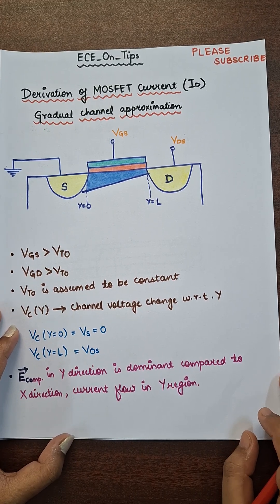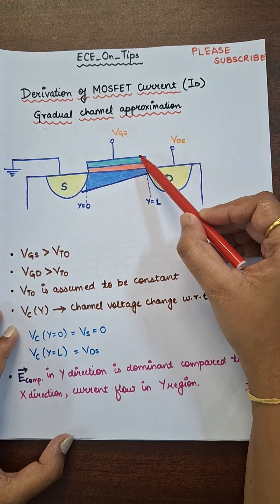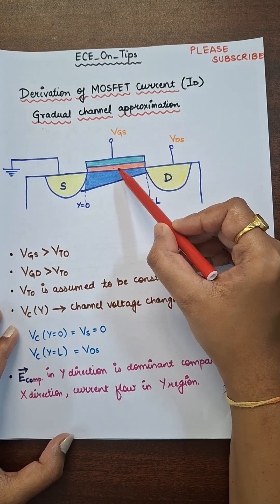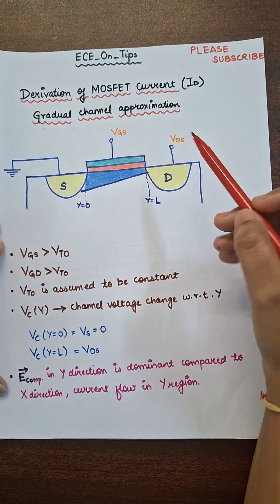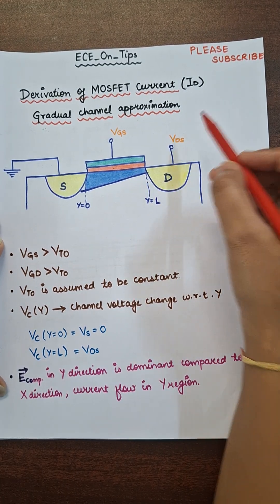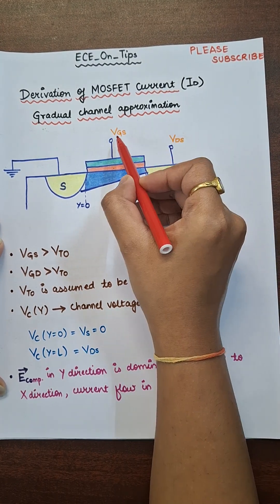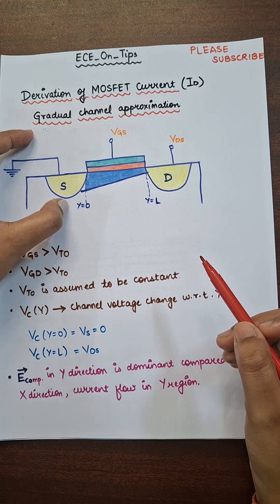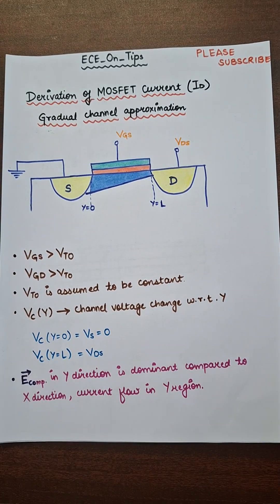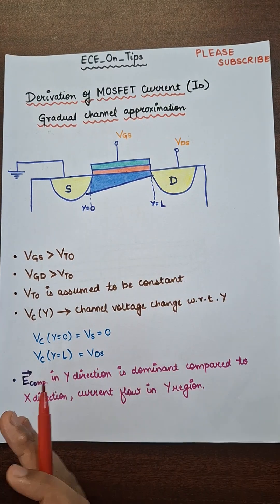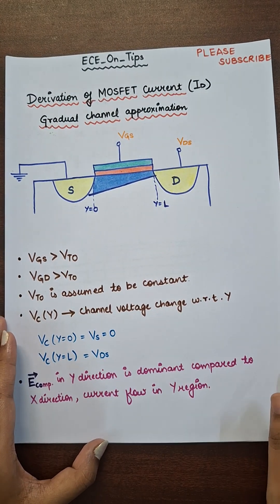I have considered an N-type MOSFET in which this is the source terminal, this is the drain terminal, and this is the gate terminal. The gate is of metal, this is oxide, and this is the channel length. The voltage across the drain terminal is VDS, the voltage across the gate terminal is VGS, and the source terminal is grounded. We are going to observe this channel length from y equal to 0 to y equal to L.